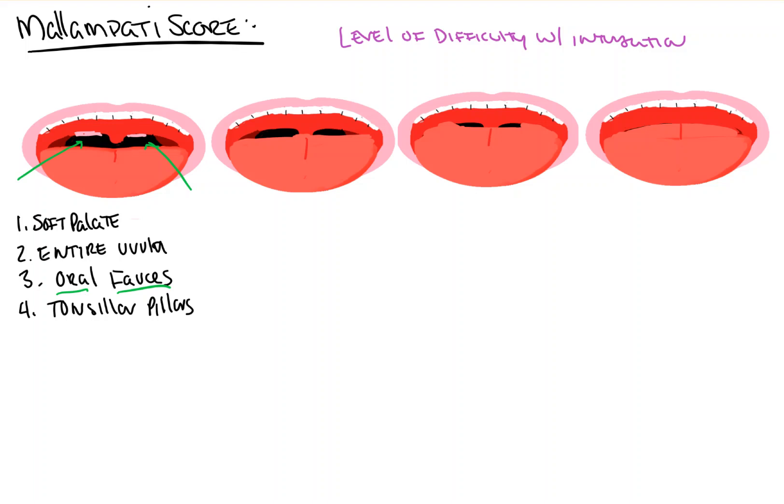I also want to clarify what the tonsillar pillars are. The tonsillar pillars are a fold of tissue that sits just anterior to the tonsil, or where the tonsil would be in a person who's had them removed. So again, a Class 1 score: soft palate, entire uvula, oral fauces in the posterior oropharynx, and the tonsillar pillars.